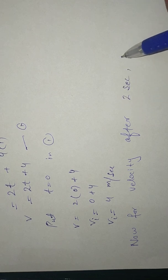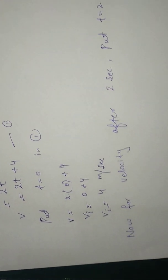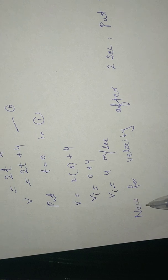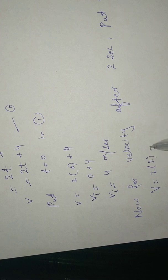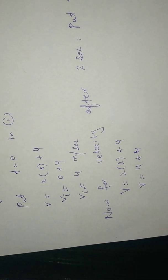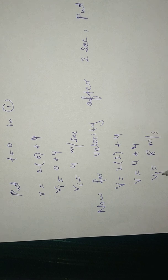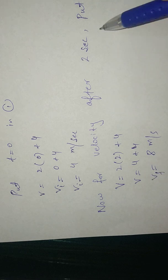For velocity after 2 seconds, put t equal to 2: v equals 2 times 2 plus 4, which equals 4 plus 4, giving v equal to 8 meters per second. This is our v final after 2 seconds.